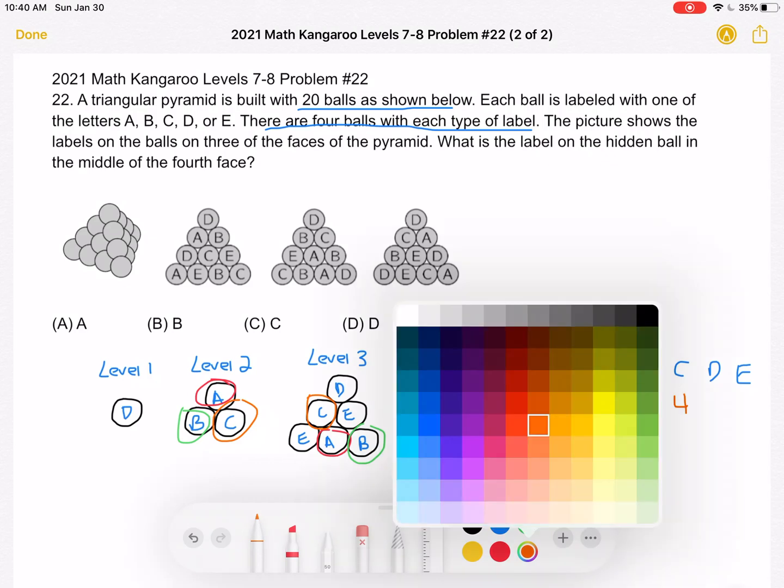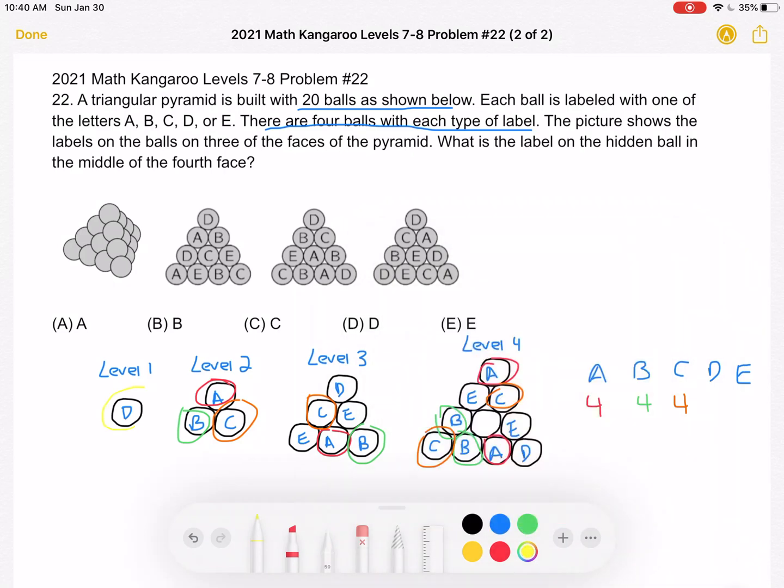Next, if we look for D, we have one, two, three. So we're missing one. Oops, let's rewrite this a little darker.